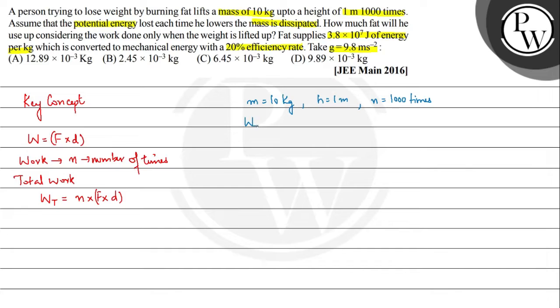Net work or total work done will be equal to force, that is 10 multiplied by the acceleration 9.8 multiplied by 1 multiplied by 1000. This will be equal to 98,000 joules.